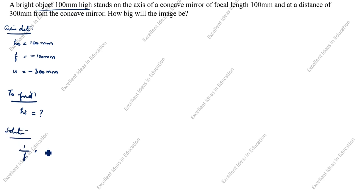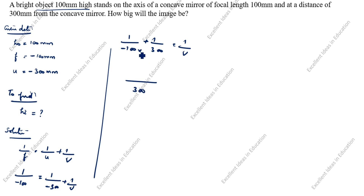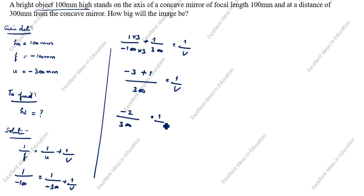Solution: 1 by F is equal to 1 by U plus 1 by V. F value is minus 100, equal to U value is minus 300 plus 1 by V. So 1 by minus 100 plus 1 by 300 is equal to 1 by V. Taking 300 as the common denominator: minus 3 plus 1 is equal to 1 by V.